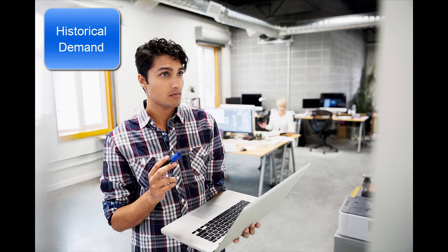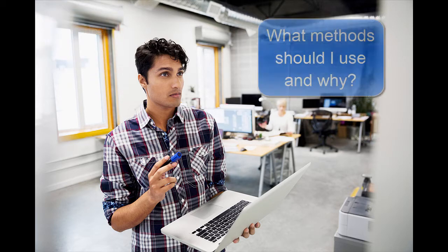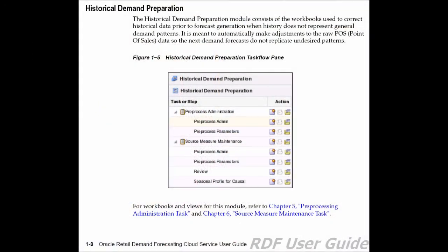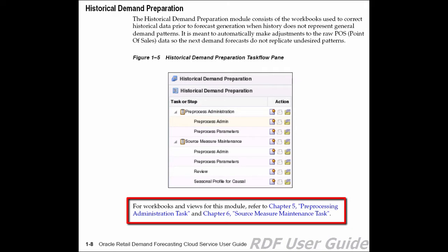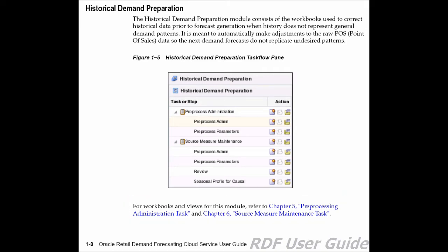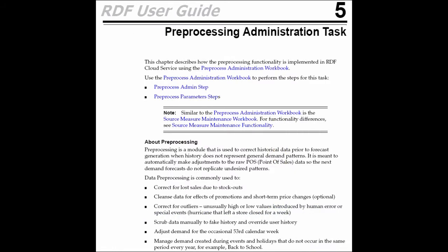A common question is: when I pre-process the history, I have several options — what methods should I use and for what purpose? The user guide provides a great starting point to fully understand the concepts necessary to accomplish historical demand preparation. The historical demand preparation module contains reference links to the workbooks you will use. By clicking a link, you are immediately transported to the pre-processing administration task.